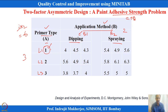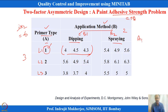The six combinations are A1-B1, A1-B2, A2-B1, A2-B2, A3-B1, and A3-B2. Each combination is run 3 times — so we have n=3 replicates. For example, combination A1-B1 yielded 3 observations such as 4.5, 4, and 4.3. These are replicate measurements of adhesive strength.